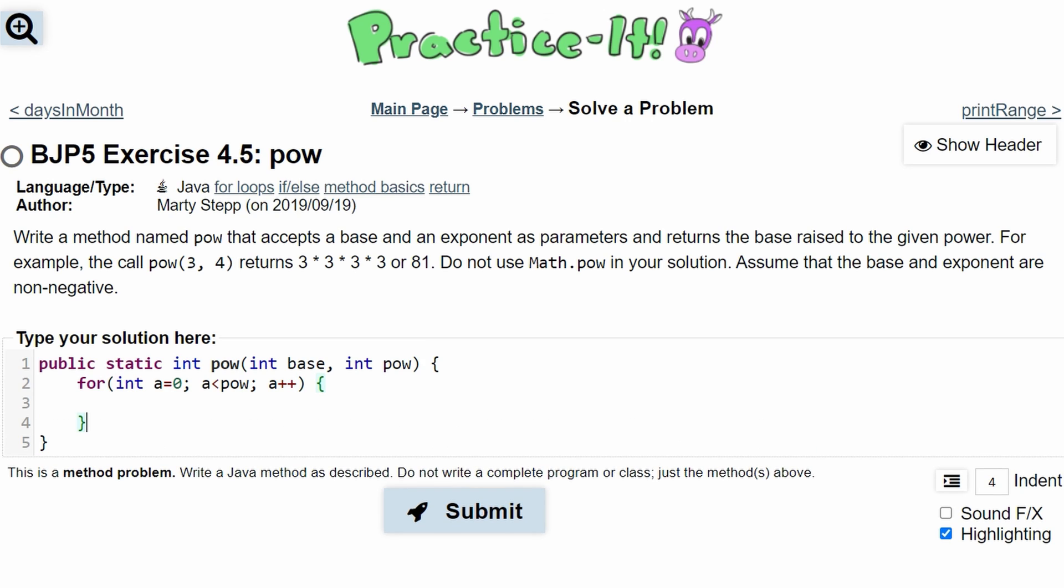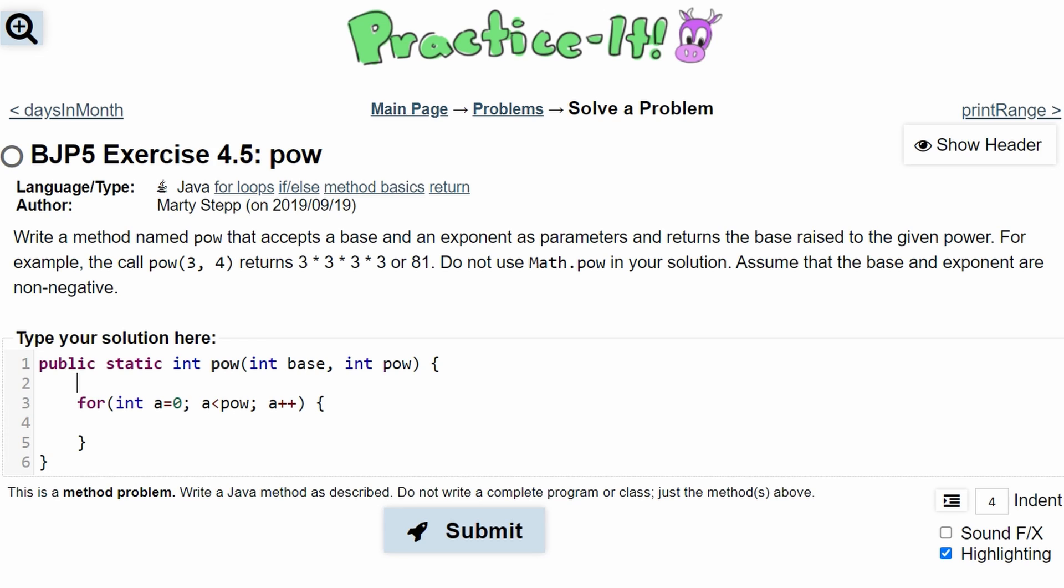So now we're going to have our entry and closing braces into our loop, and now we've got to multiply our base. Before our for loop, we need to make a new value to store this in. We're going to say int sol for solution, and we're going to initialize this to 1 because we're going to multiply into this.